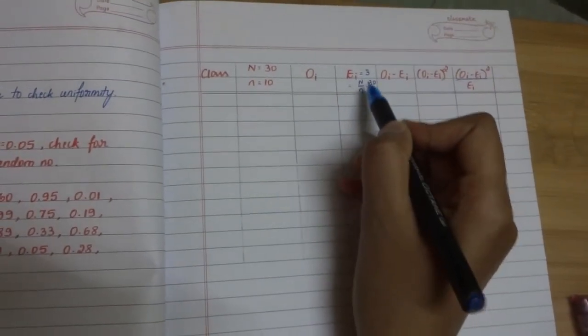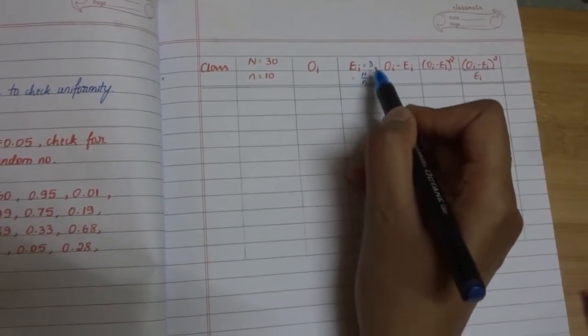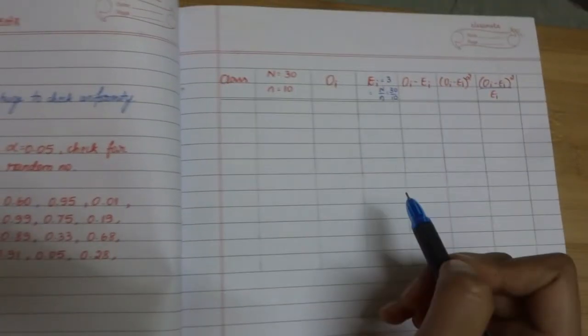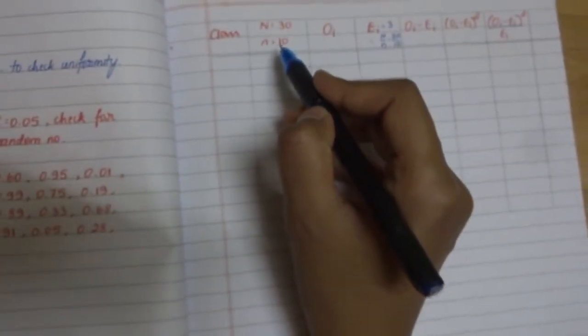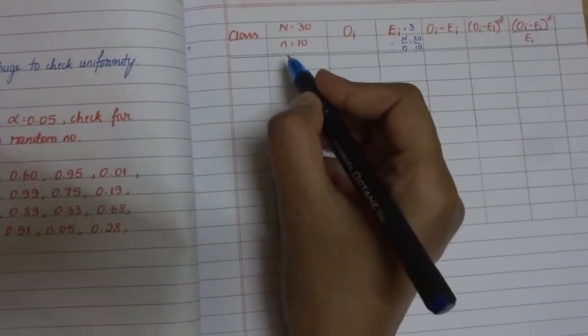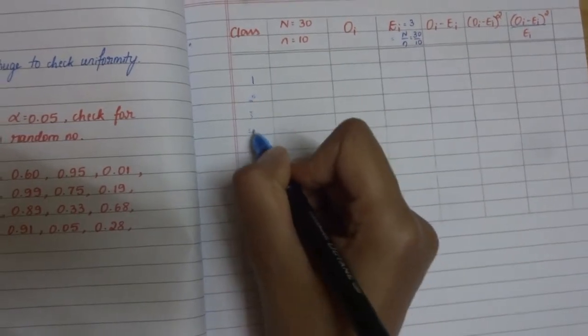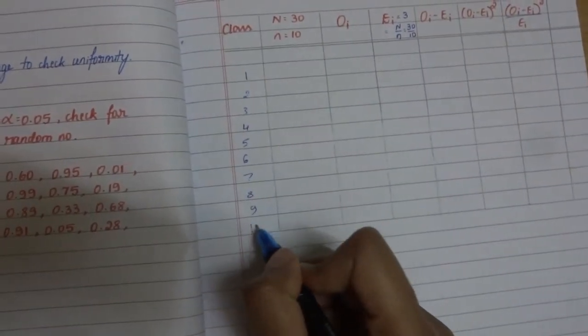ei is nothing but capital N by small n, that is 30 by 10, which is 3. Capital N is the number of random numbers. There are 30 random numbers. Small n is the class that we are dividing those numbers into. We are dividing it into 10 classes: 1, 2, 3, 4, 5, 6, 7, 8, 9, 10.